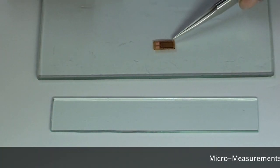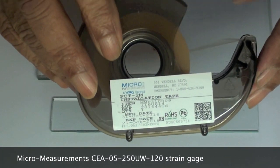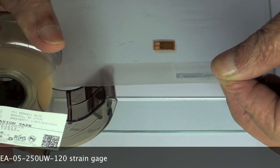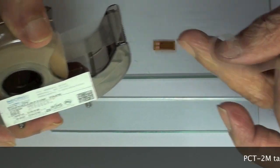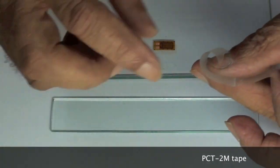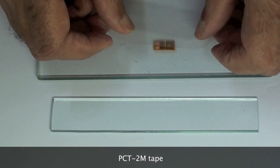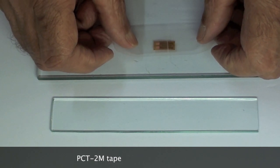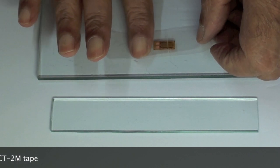To transfer the gauge to the beam, a special tape such as the PCT-2M tape is used as it does not leave its sticky mastic behind on surfaces. A length of 3-4 inches of PCT-2M tape is laid over the gauge and its edge is folded to make a handle to lift the tape again.